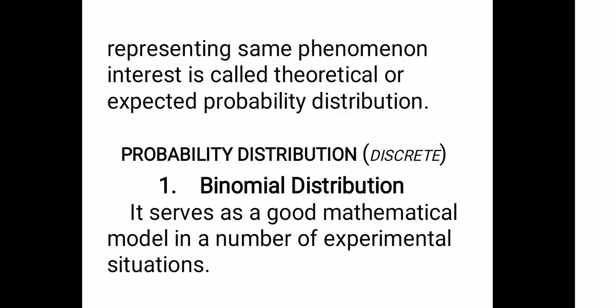So, probability distribution — discrete types include binomial and Poisson. That's what we'll discuss with the probability distribution. We'll discuss with the discrete distribution first — starting with binomial distribution.